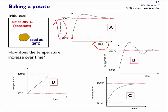Let's consider case A — if the potato gets hotter than 200°C, it would be hotter than the air. If the potato gets to say 201°C, we'd have heat transfer from the potato to the air because the air is cooler. So if the potato gets above 200°C, there is no way it can keep rising — that's simply not possible. For the same reason we can exclude case B; if it gets above 200°C, there is absolutely no way it can continue to get hotter.